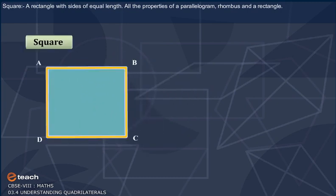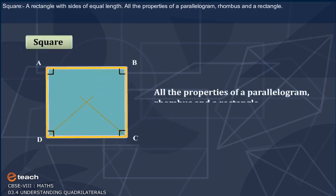Square: A rectangle with sides of equal length. All the properties of a parallelogram, rhombus, and a rectangle.